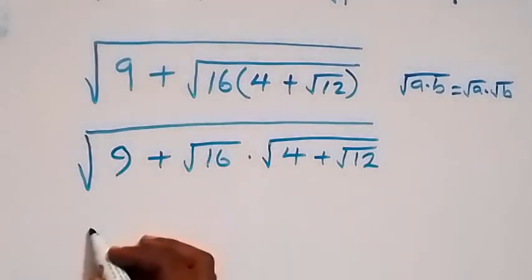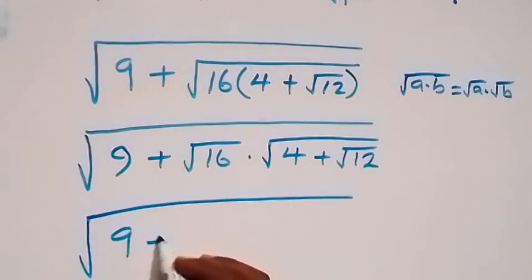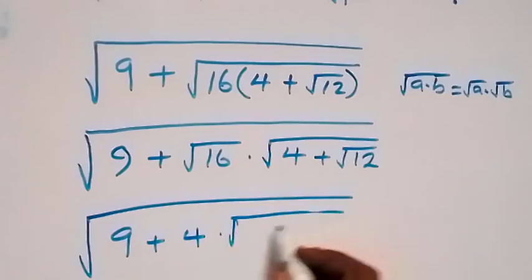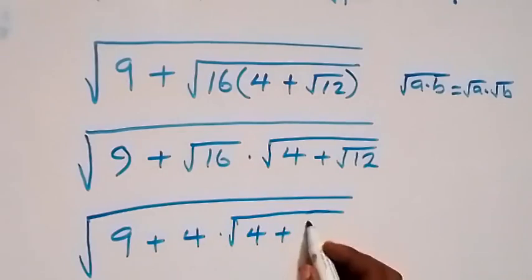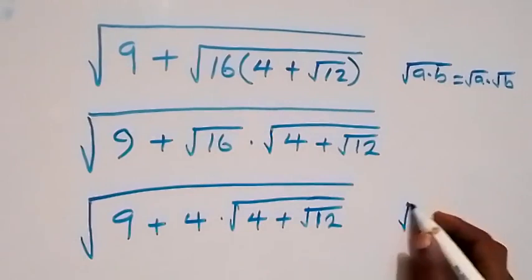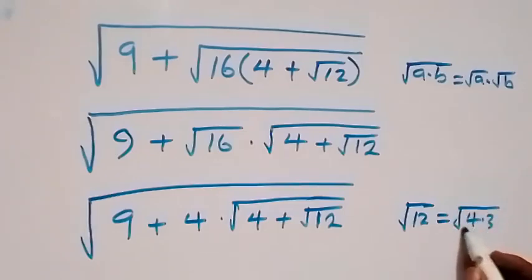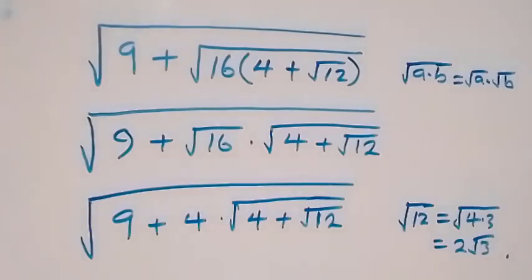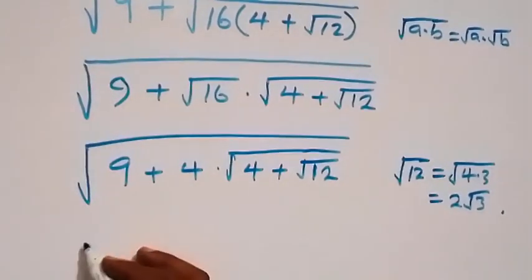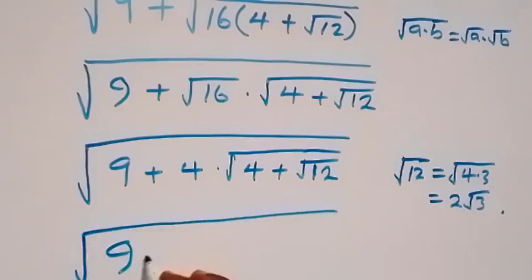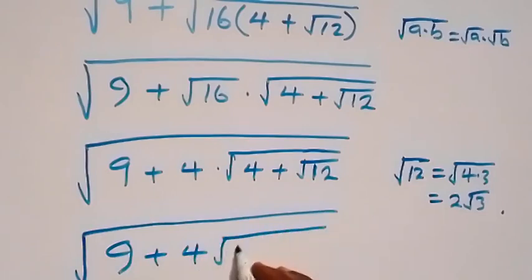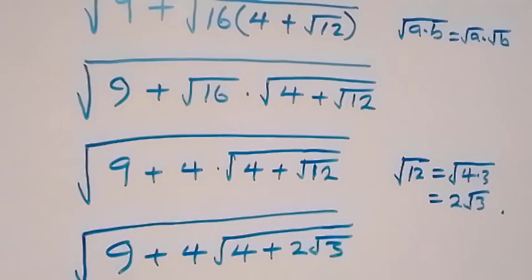Square root of 16 is the same thing as 4, and we have square root of 9 plus 4, then times square root of 4 plus root 12. Now, root 12 we can write again — root 12 equals root 4 times 3, and when we separate this, this will give us 2 root 3. From here, we replace root 12 as 2 root 3, and this will become square root of 9 plus 4, then plus 2 root 3.